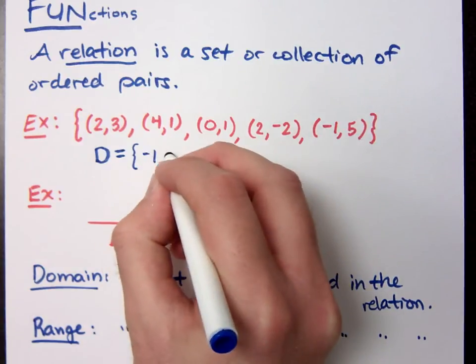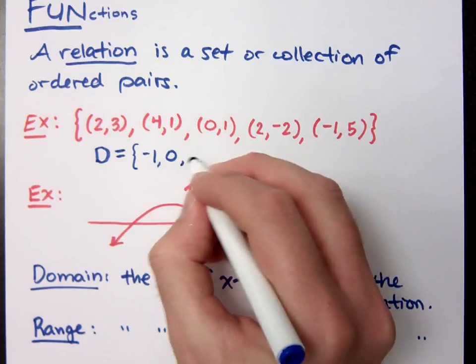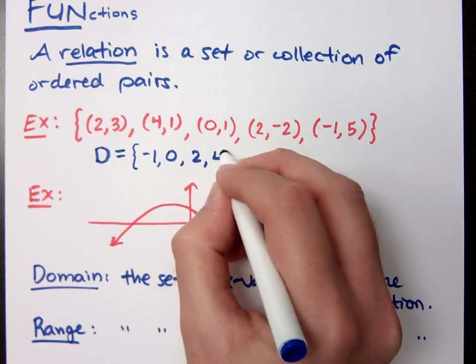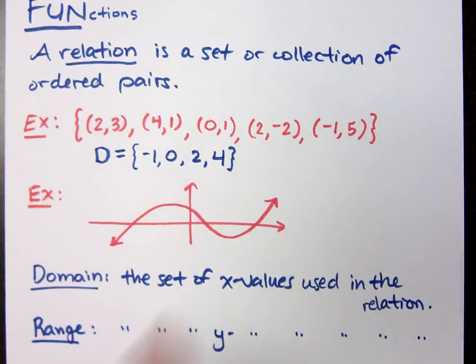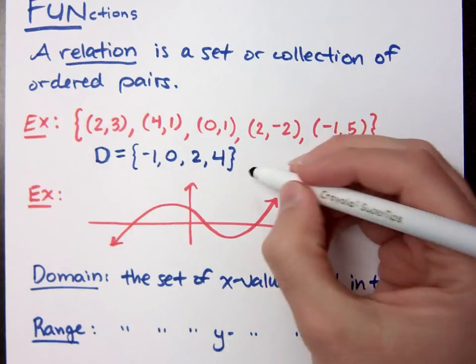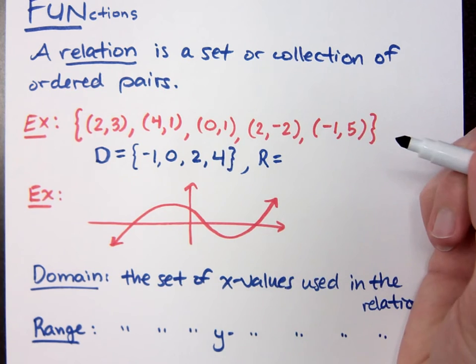Negative 1, 0, 2, and 4. Even though 2 occurs twice, you only have to list it one time. Because the domain is just saying, let me know all of the x's that you're using. You don't need to tell me you're using 2 twice. All I need to know is that you're using it and we're good.